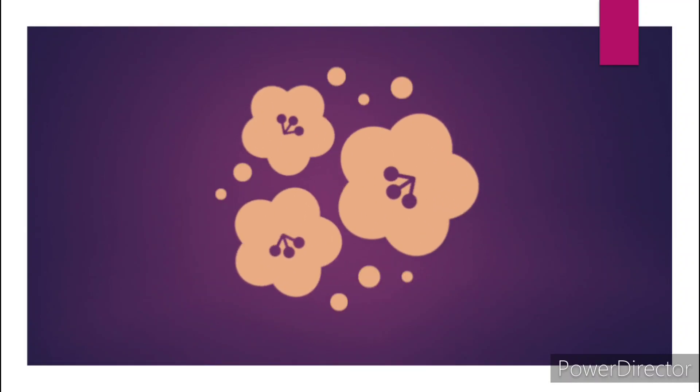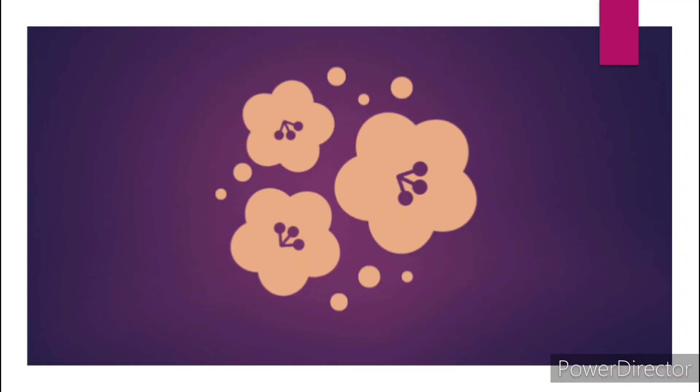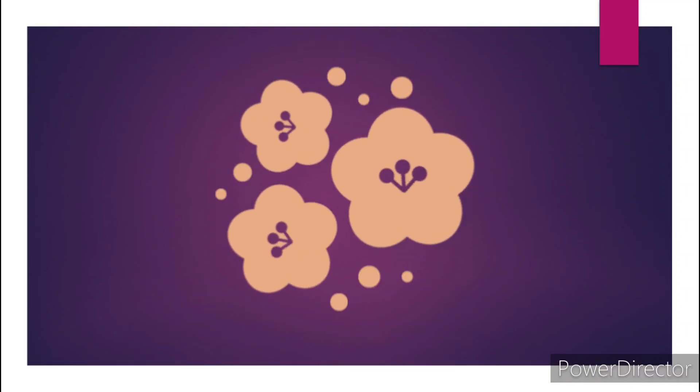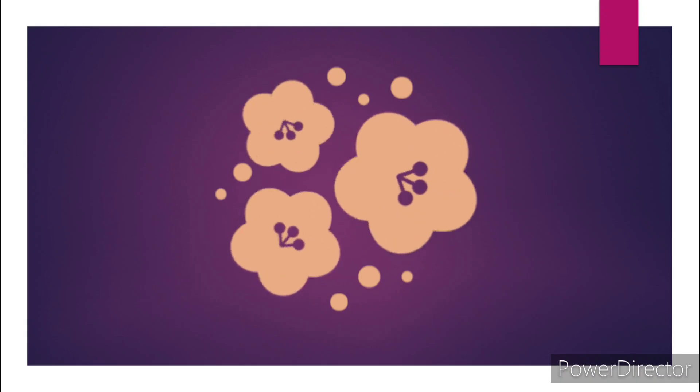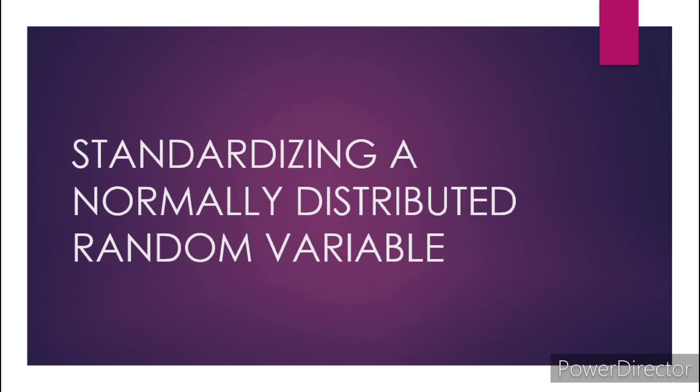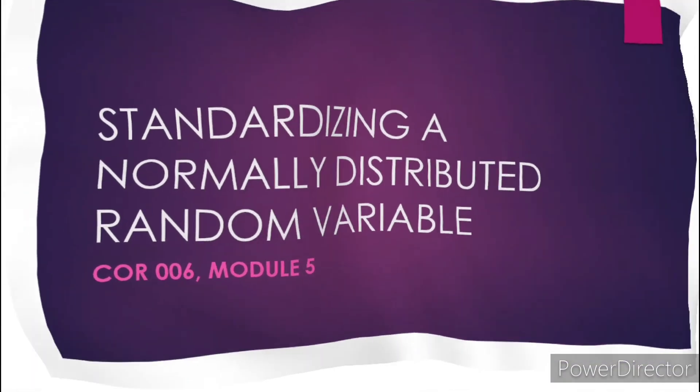Good day, Core 006 students. Since we are done with Module 4, let's now proceed to Module 5, which is all about standardizing a normally distributed random variable. For this module, we have two objectives.